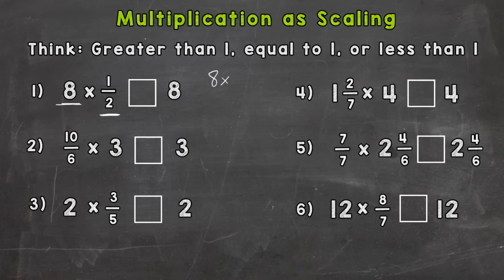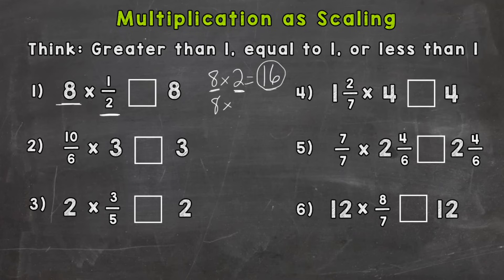Let's take a look at 8 times 2. We're multiplying by something greater than a whole, so our answer is going to be 16 — we increased the value from 8 up to 16. Now if we multiply by something equal to 1, we get the same answer, equal to 8. And going back to number 1, we're multiplying by something less than a whole, so 8 times a half equals 4. So 8 times a half is less than 8.